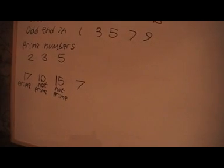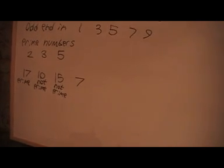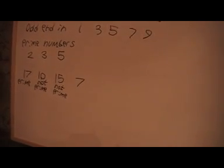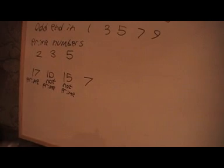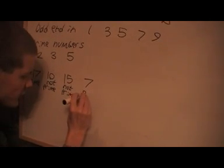Seven cannot be divided by two. That would leave a remainder. It cannot be divided by three. That would also leave a remainder. So four, five and six cannot either. So the only numbers that divide into seven are one and seven. So seven is a prime number.